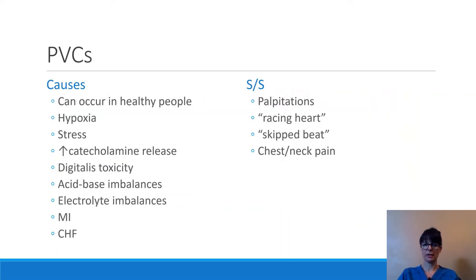Causes of PVCs include: they can occur in healthy people and be somewhat normal. They can also be caused by hypoxia or stress — anything that increases catecholamine release. Digitalis toxicity can cause PVCs, as well as acid-base imbalances and electrolyte imbalances, particularly potassium and magnesium. Myocardial infarction and congestive heart failure can also make the ventricles more irritable.